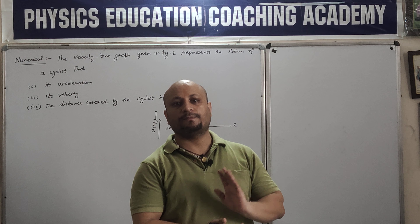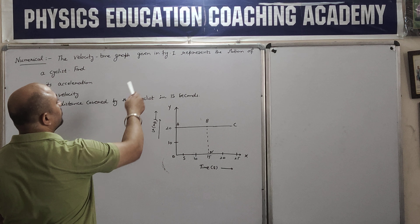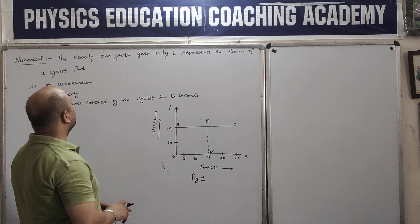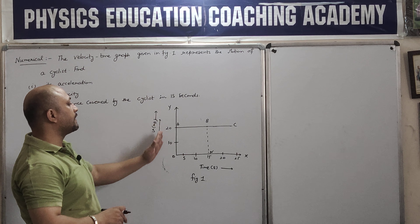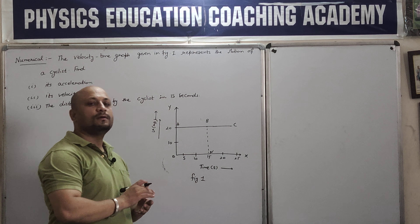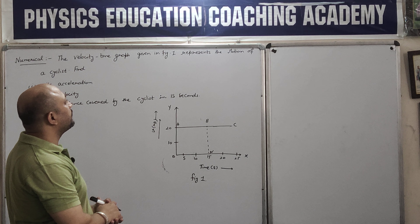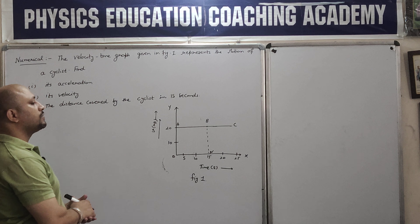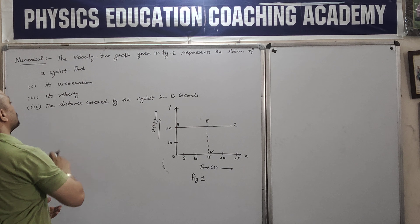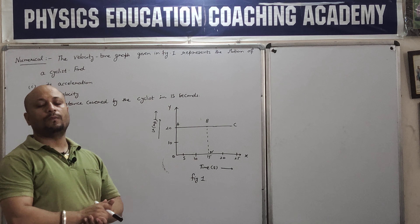The numerical is: the velocity-time graph given in Figure 1 represents the motion of a cyclist. This is Figure 1 - the velocity-time graph. This is the Y-axis. The velocity-time graph given in Figure 1 represents the motion of a cyclist. Find its acceleration, its velocity, and the distance covered by the cyclist in 15 seconds.